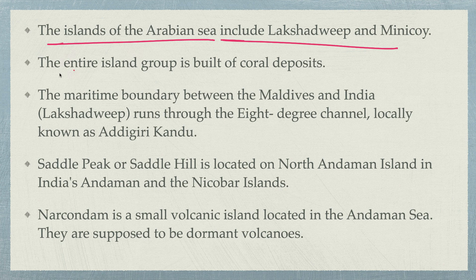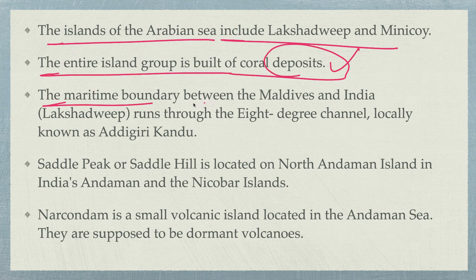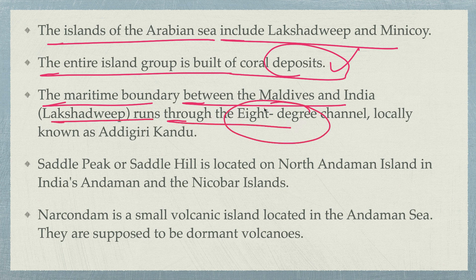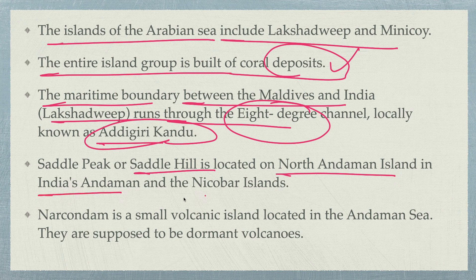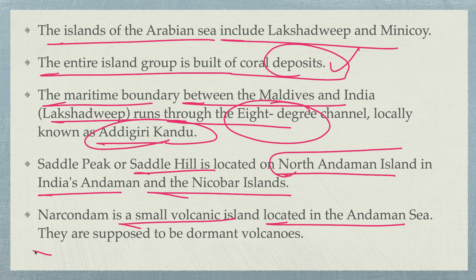The island of Lakshadweep includes Lakshadweep and Minicoy. The entire island group is made of coral deposit — yes, option A is right. The maritime boundary between the Maldives and India's Lakshadweep runs through the 8-degree channel. Saddle Peak or Saddle Hill is located in the North Andaman Island in the Andaman and Nicobar island group. Narcondam is a small volcanic island in the Andaman Sea, supposed to be a dormant volcano.